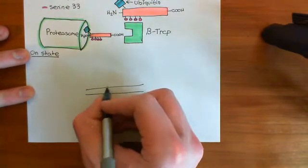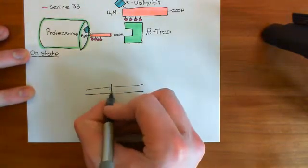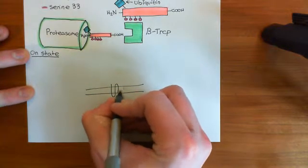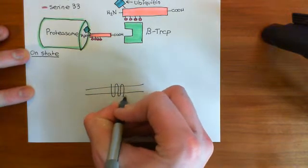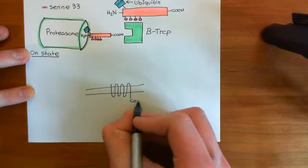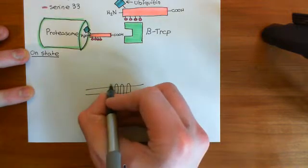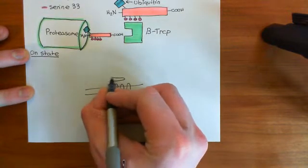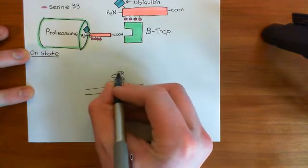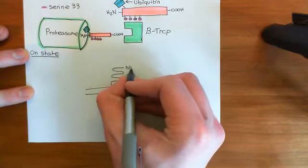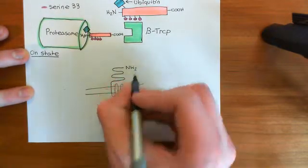So let's say, once again, this is the cell membrane. We've then got our frizzled receptor here, which, remember, is a G-protein-coupled receptor. So here is the carboxylic acid terminus. Then we've got our large amino terminal domain here, and then our amino terminus over here.